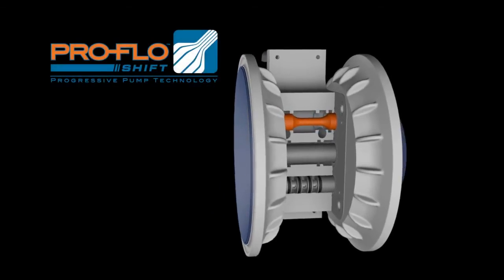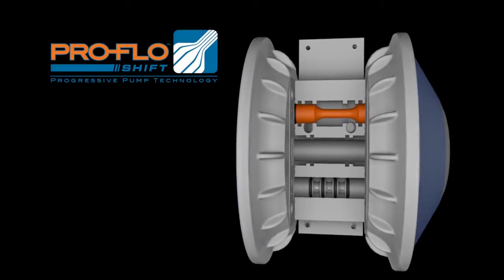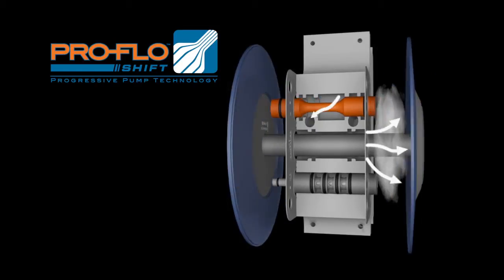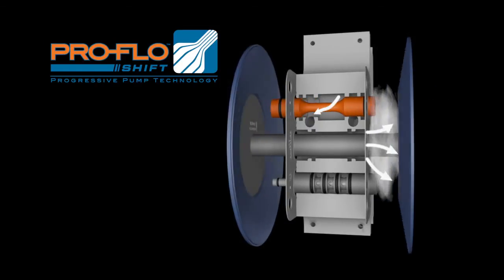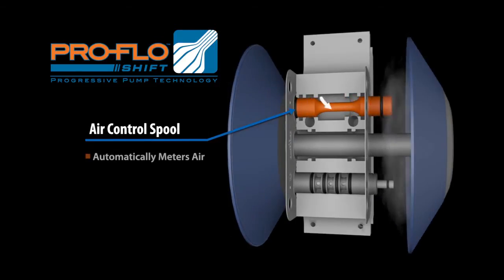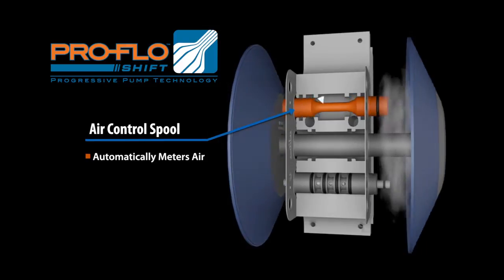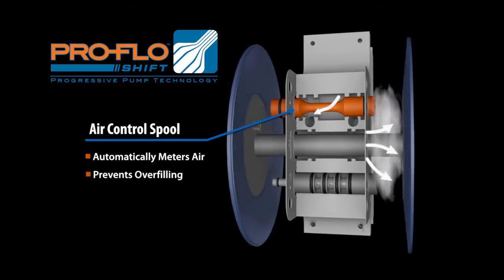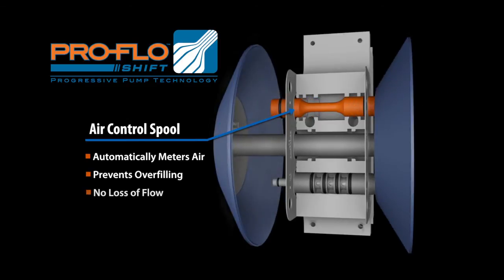ProFlow shift technology is designed to maximize efficiency by minimizing air consumption. This new technology optimizes the pump's performance by using the position-sensitive air control spool, which automatically meters air at the end of the stroke, preventing overcharging or overfilling of the air chamber without any loss of performance or product yield or flow.